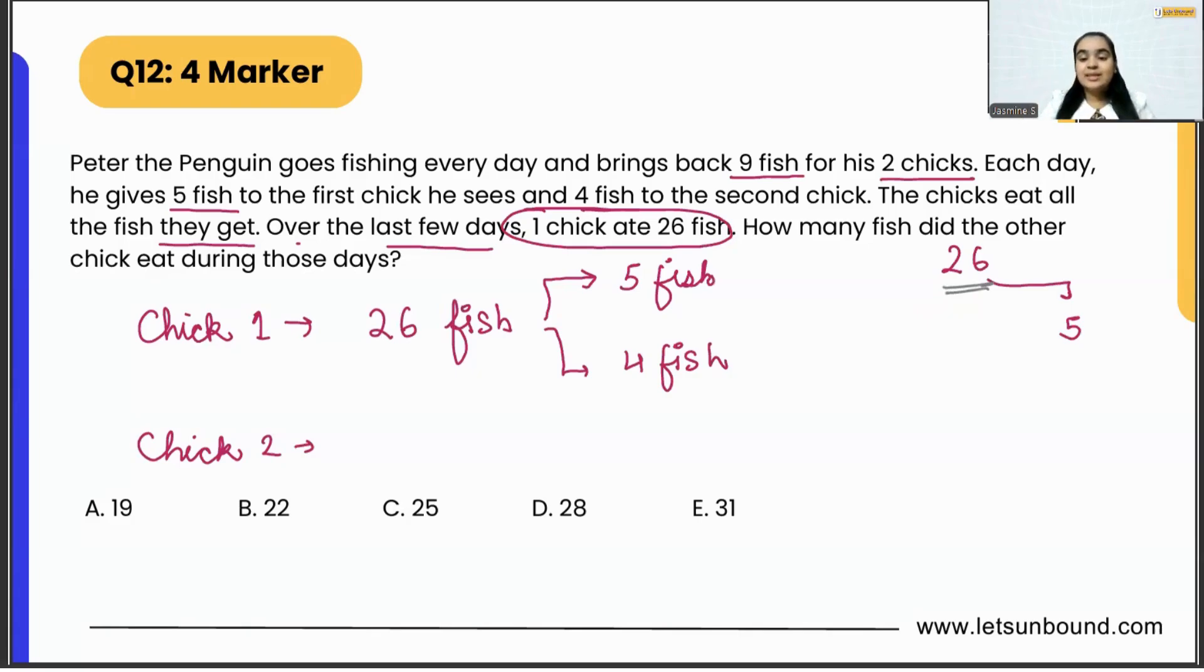As 26 does not come in the table of five, is there any smaller number that comes in the table of five, smaller than 26 but divisible by five? Yes, it can be 25, 20, 15, or 10. Let's say Chick 1 is eating 25 fishes. For most of the days he got five fishes, but then we will be left with one fish. 26 minus 25 is one.